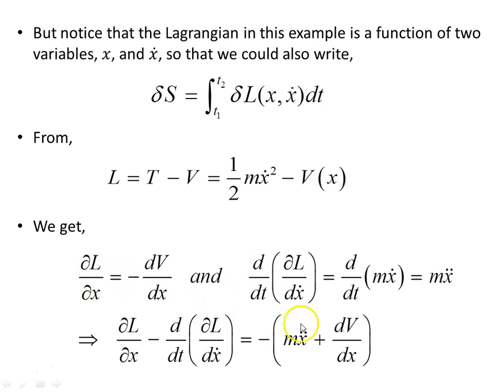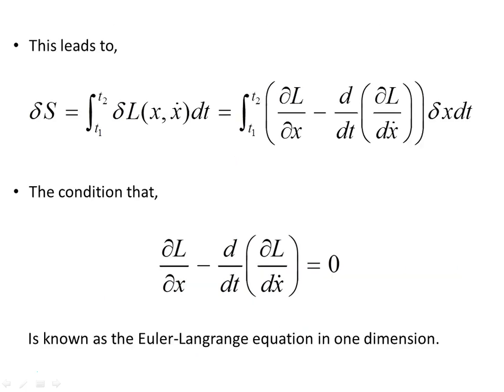Now, if we subtract this equation from this one, we end up with, where we started again, the variation of the action, that term δS, which we then set to zero. Or the object within the integrand we set to zero. And this leads to δS is, at least in one dimension, we end up with this object here. And the condition that dL/dx minus d/dt of dL/dx dot is zero, is known as the Euler-Lagrange equation in one dimension.